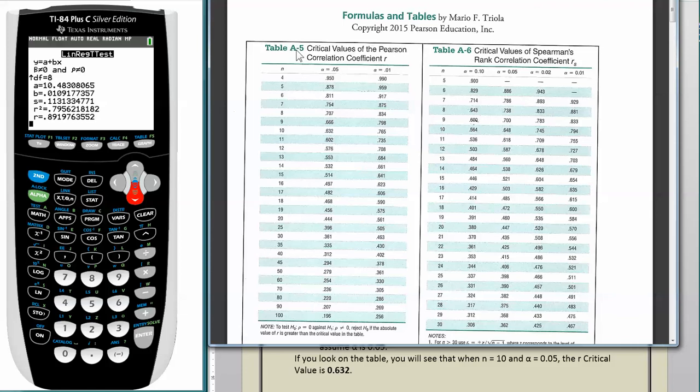So let's take a look at that table. So here's the table. Notice this is table A5, over here this is table A6. We're just looking at table A5. So here's the column for N. We come down to 10. Here's the column for alpha equals 0.05, and here's the column for alpha equals 0.01. So we come down to the 0.05 column, and N equals 10. There you see the R critical value is 0.632.